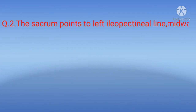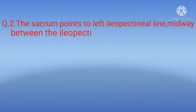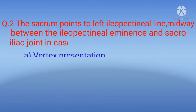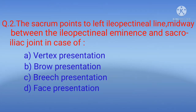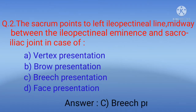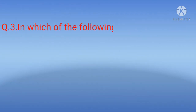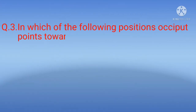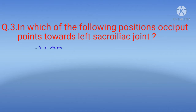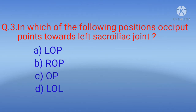Question 2: The sacrum points to the left iliopectineal line midway between the iliopectineal eminence and sacroiliac joint in case of — options: A) vertex presentation, B) brow presentation, C) breech presentation, D) face presentation. The correct option is C) breech presentation.